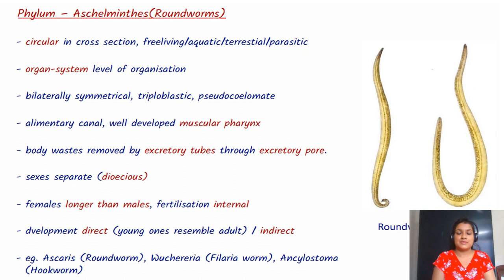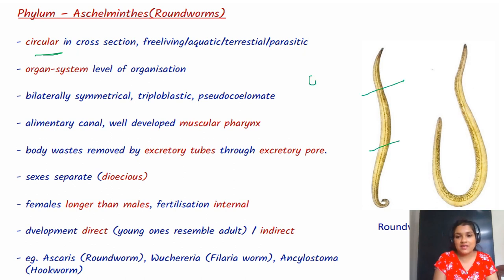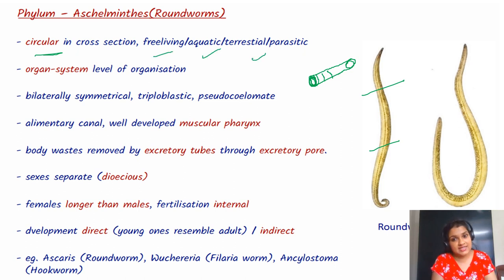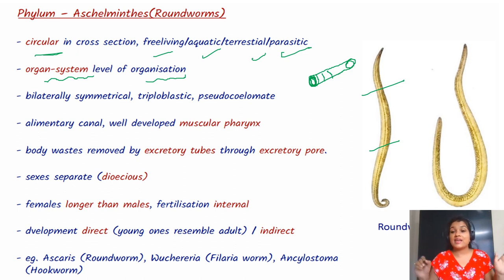Now we will come to phylum Aschelminthes or roundworms. They are circular in cross section — if we cut the body, we get a cylindrical form. They can be free-living, aquatic, terrestrial, or parasitic. They have organ system level of organization, which is more advanced than tissue level.